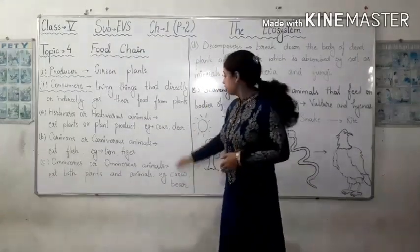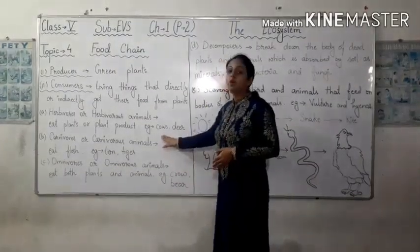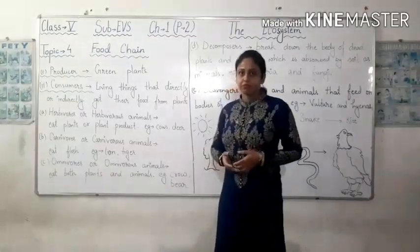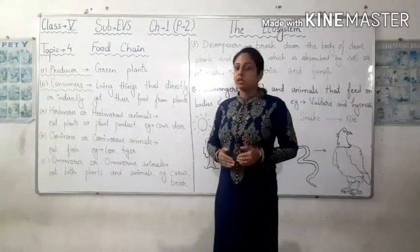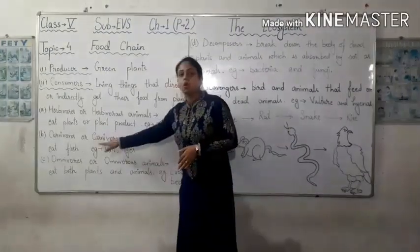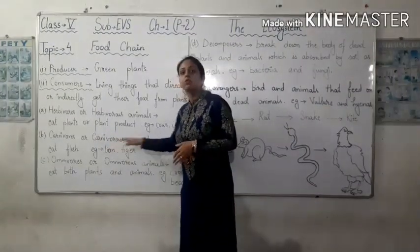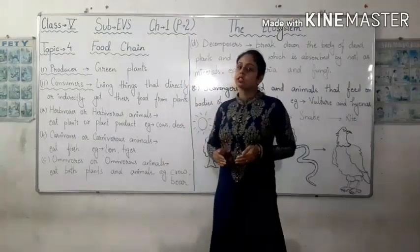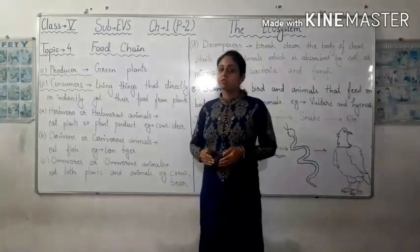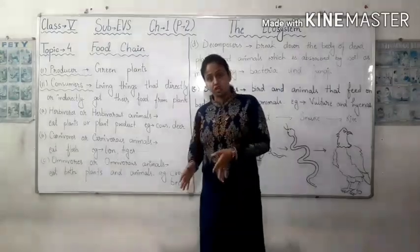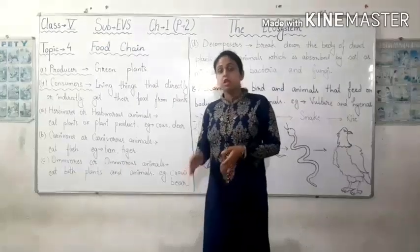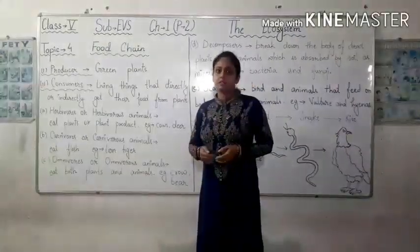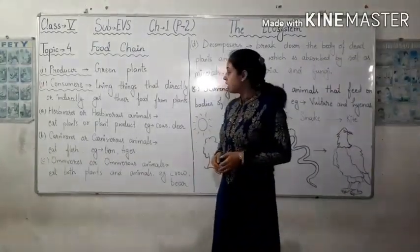Examples of herbivores include cow, deer, etc. Second, we have carnivores, or carnivorous animals. Carnivores are the animals that eat only flesh. Examples include lion, tiger.